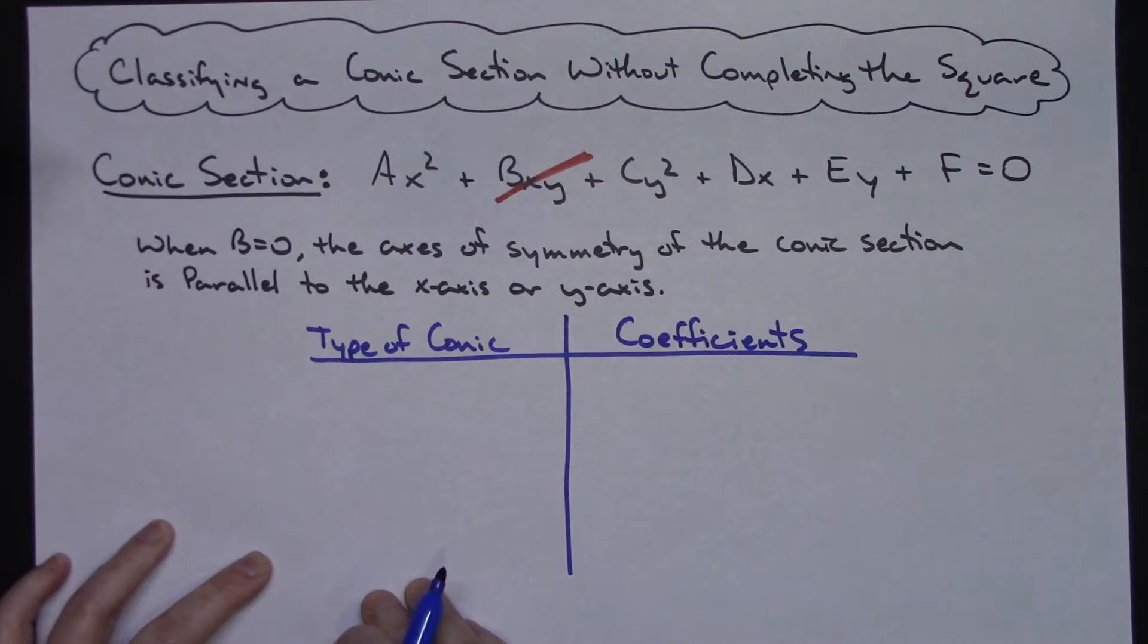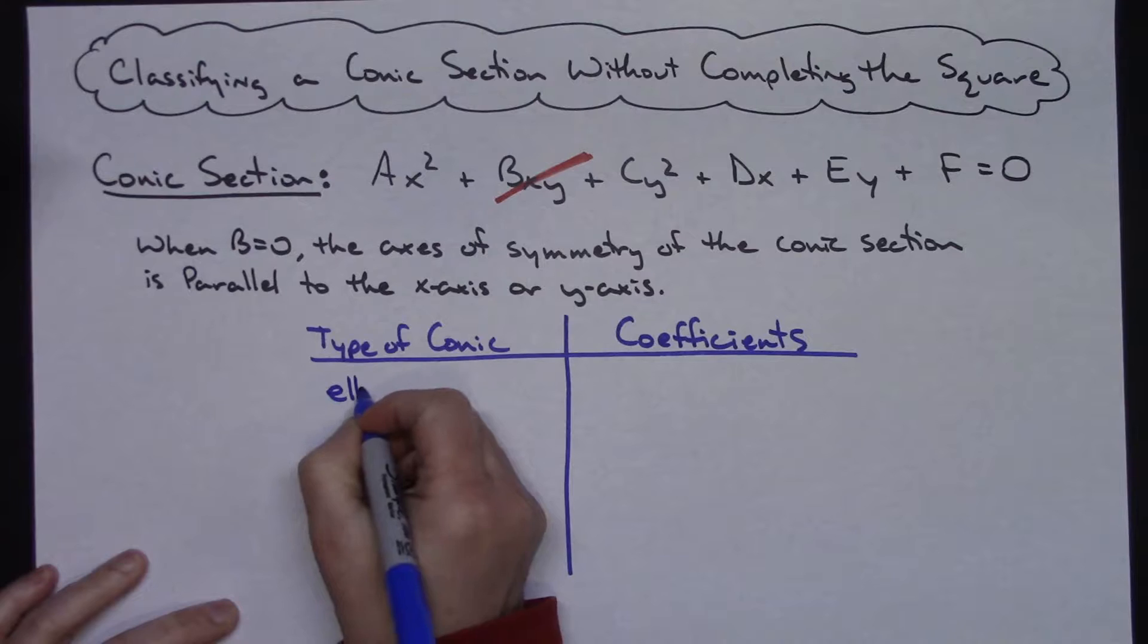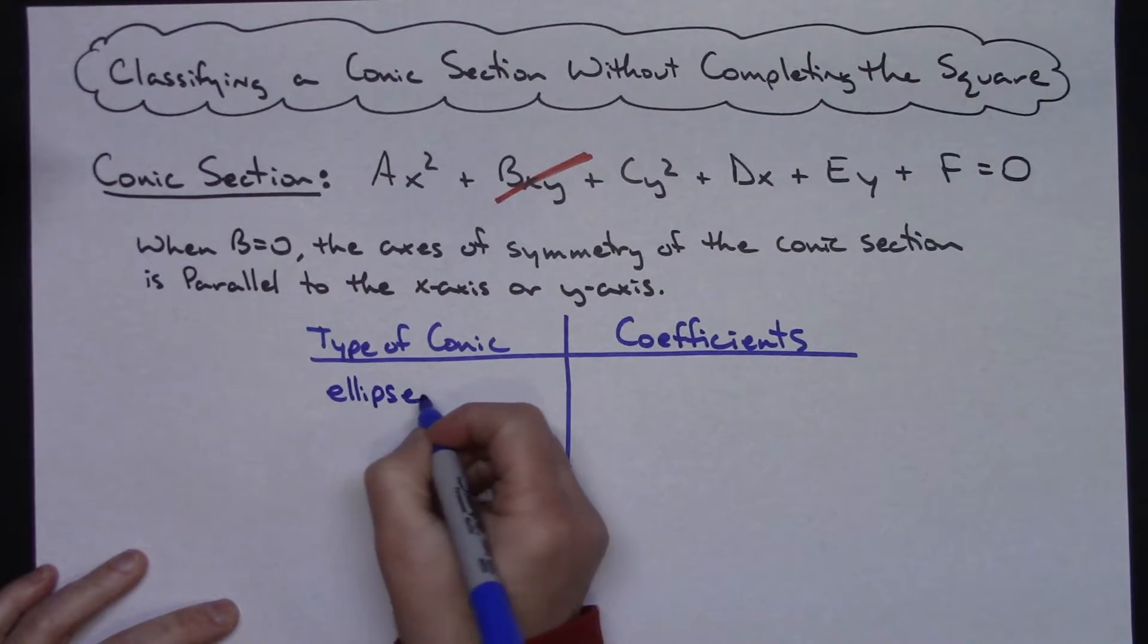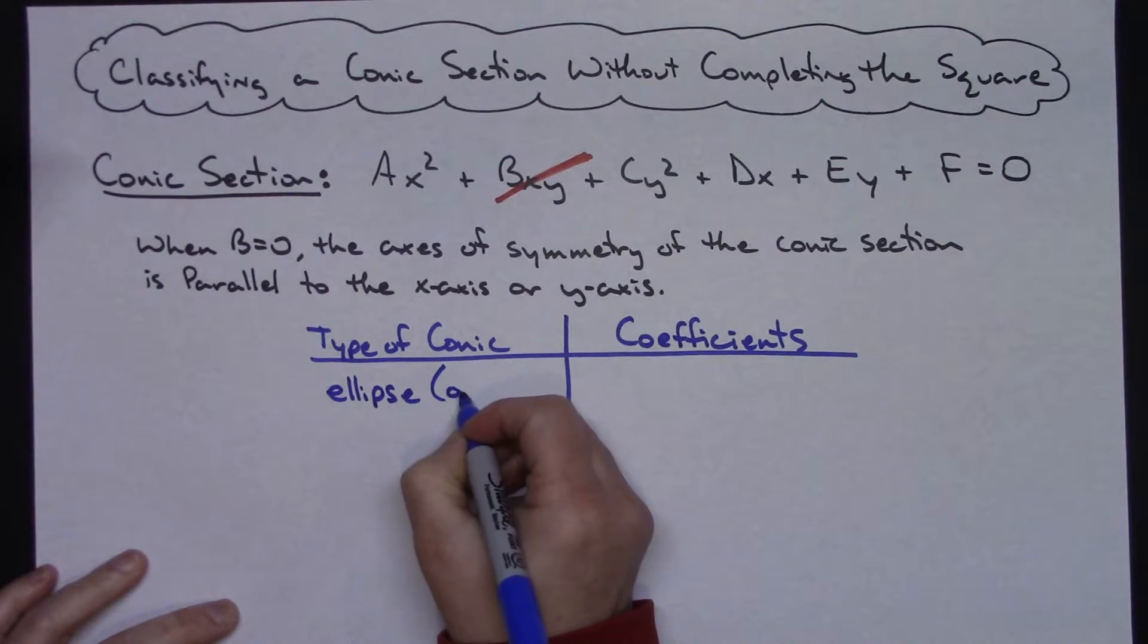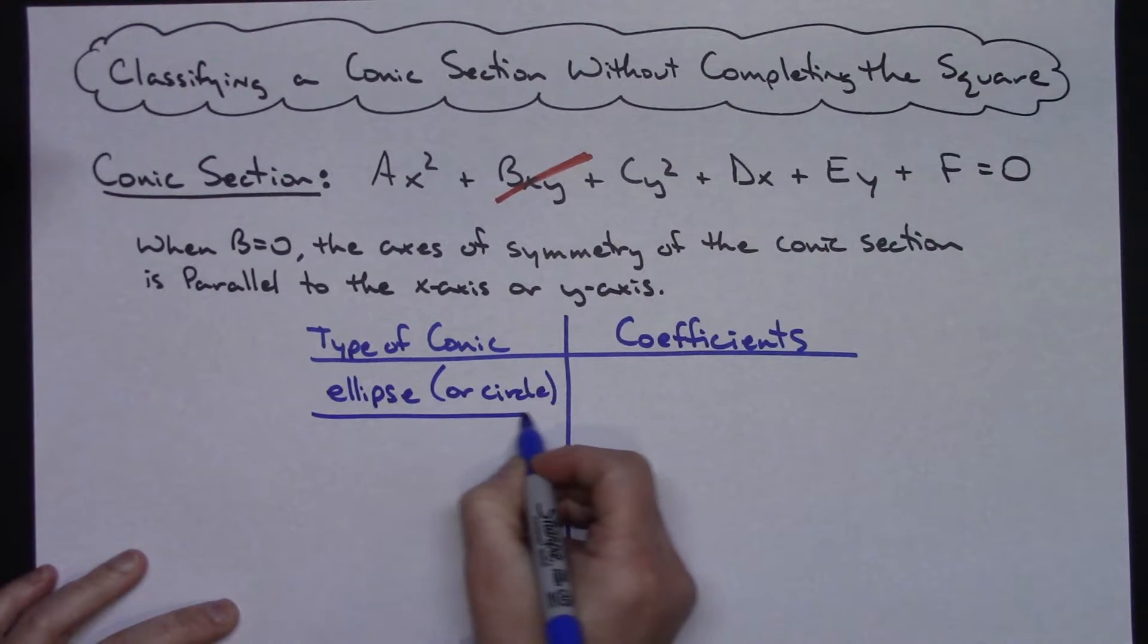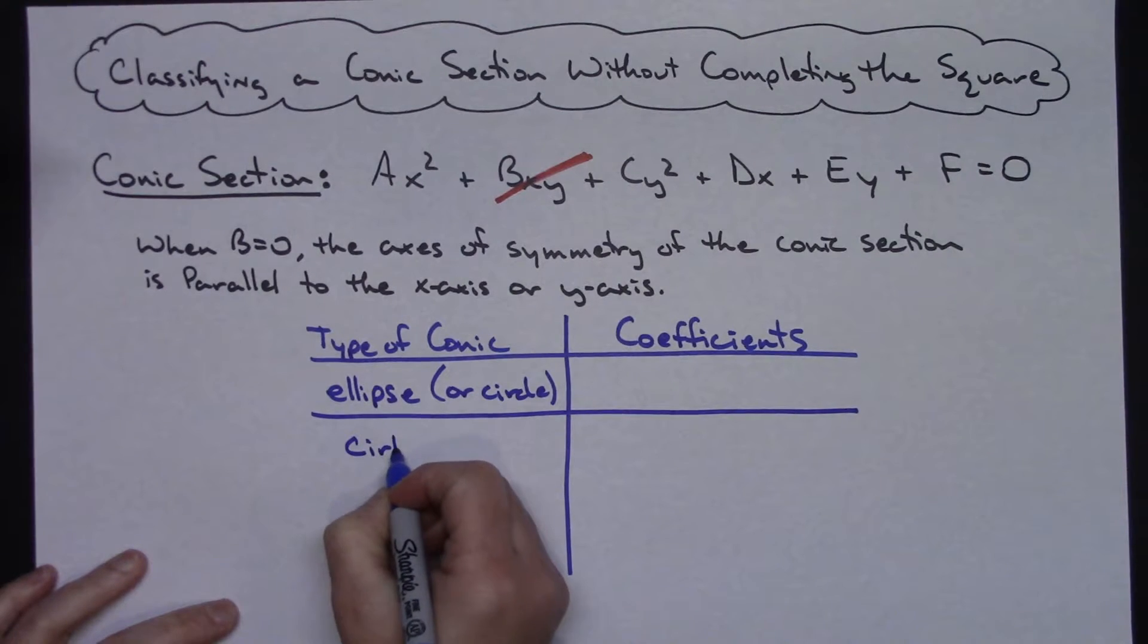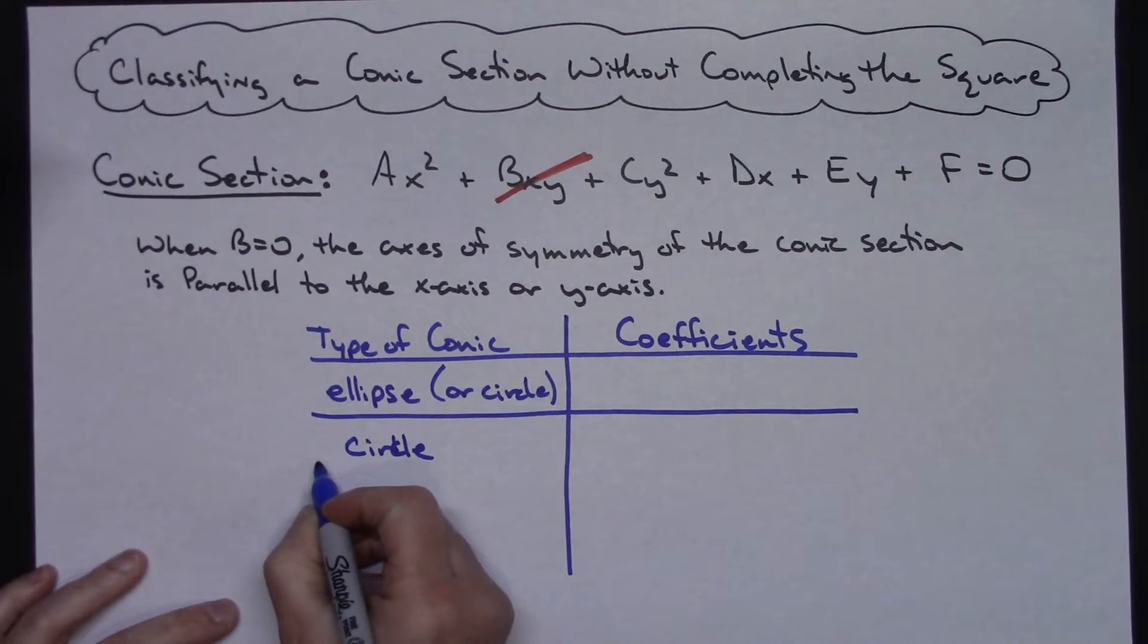Now I list these in a certain order. I always list the ellipse first, and I really need to put ellipse, and then put or circle here. So ellipse is going to be my first one, and then circle is going to be my next one.